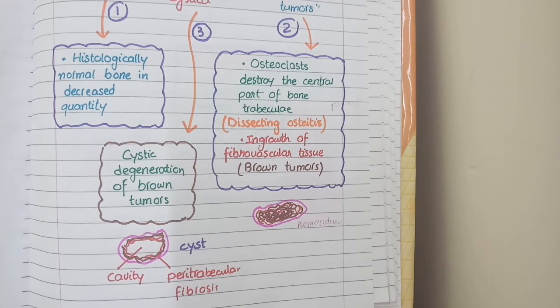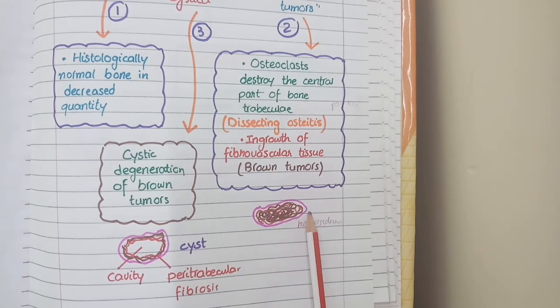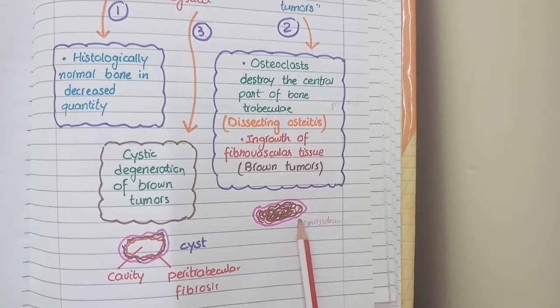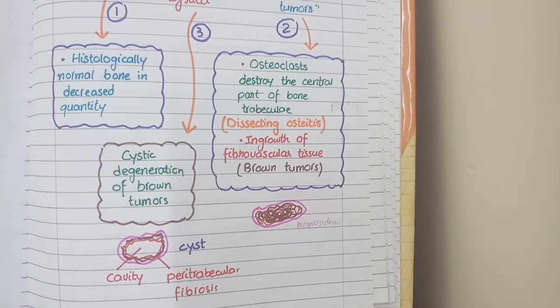In this diagram, you can see a brown-colored mass surrounded by pink-colored bony matrix or fibrotic areas. This mass is known as a brown tumor.